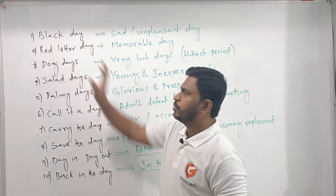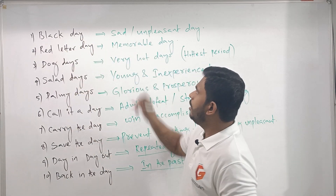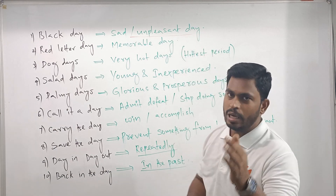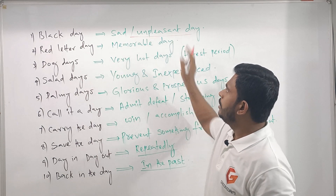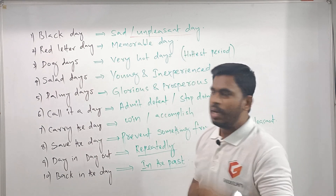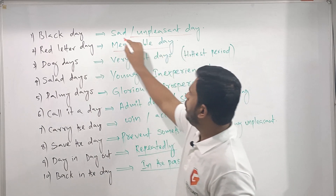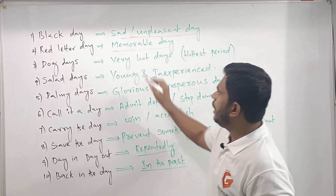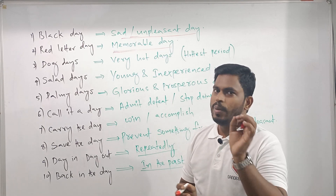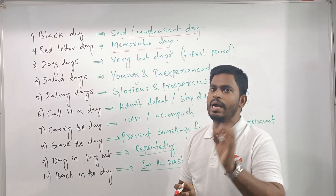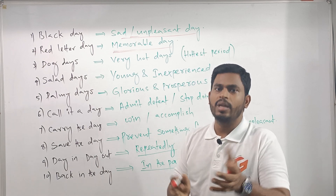Here are two idioms. If you use a black color in that calendar, it will be a sad or unpleasant day. If you use a red color, it will be a memorable day. So, if you use black color for a particular date, it means a sad or unpleasant day. If you use red color, it means a memorable day.